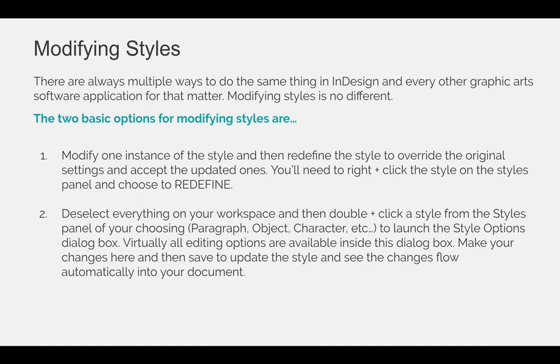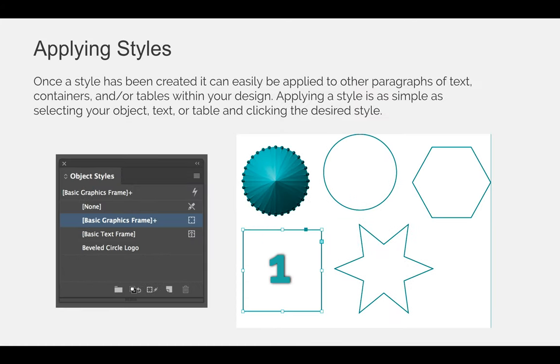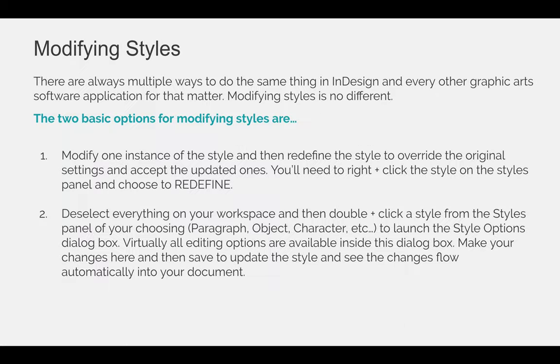When you modify a style, you'll get a plus sign next to it — like you see here next to Basic Graphic Frame — telling you that whatever you have selected has a different setting than what has been saved. Once you see that plus sign, you can right-click the style and redefine it based on your change, such as making your star yellow instead of blue. I don't like this option — I think it gets confusing.